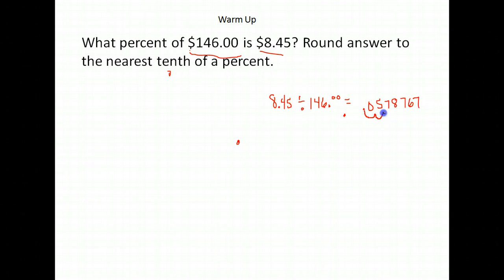So move the decimal two places to the right, giving us 05. We can actually drop the 0, so 5.78767.